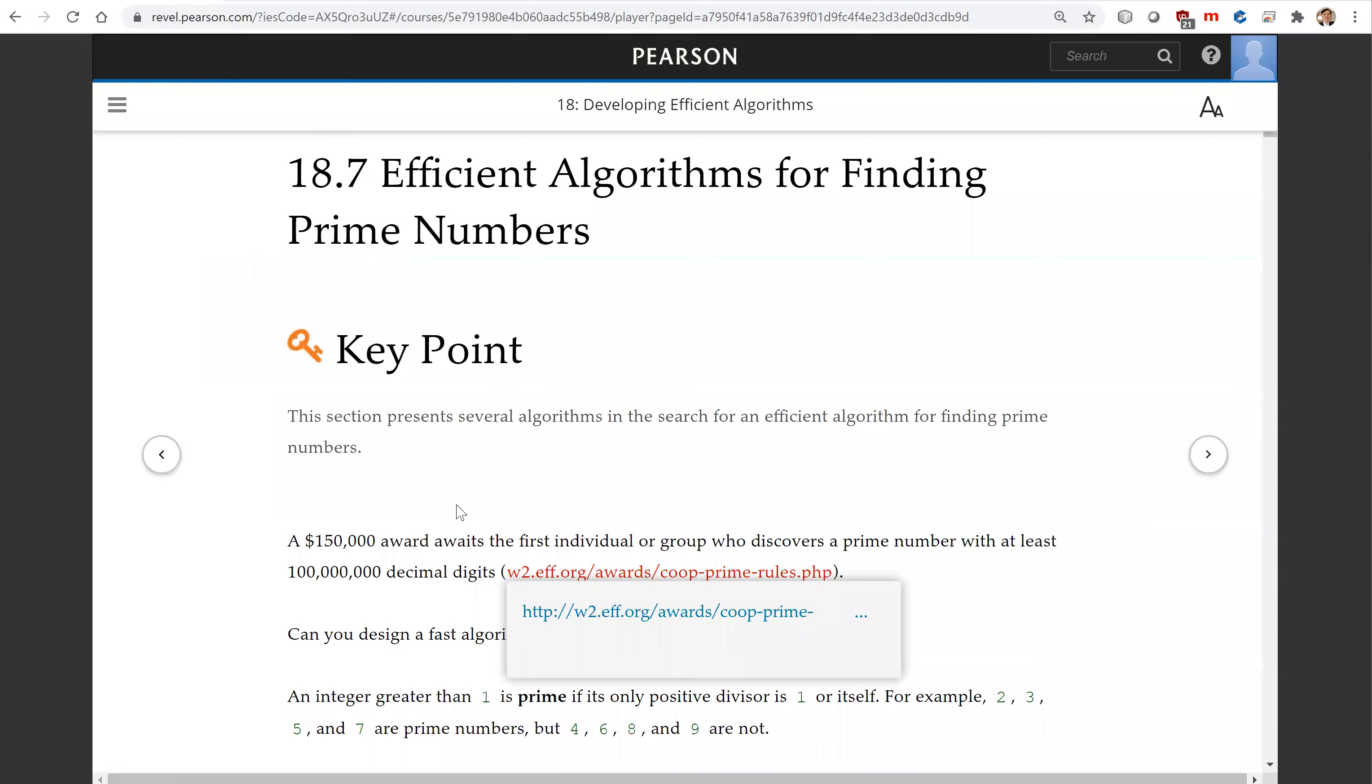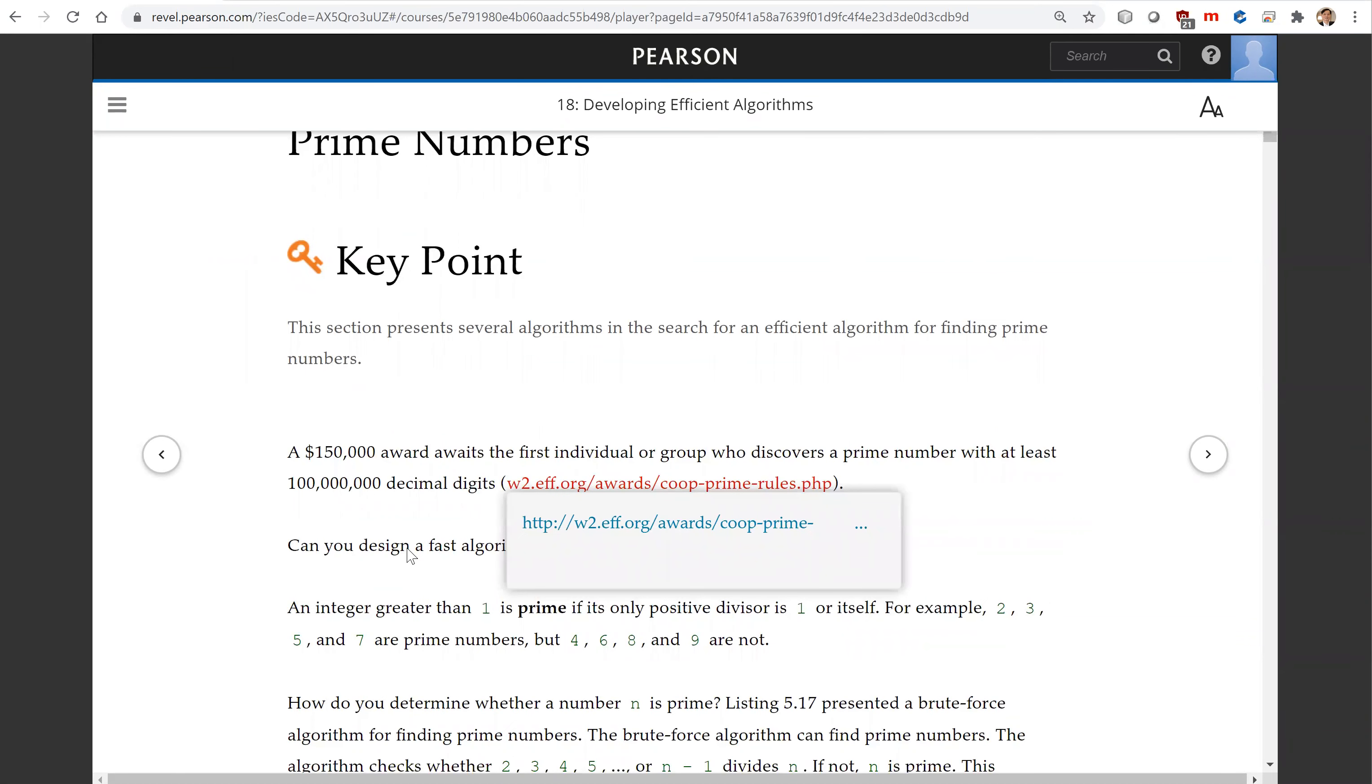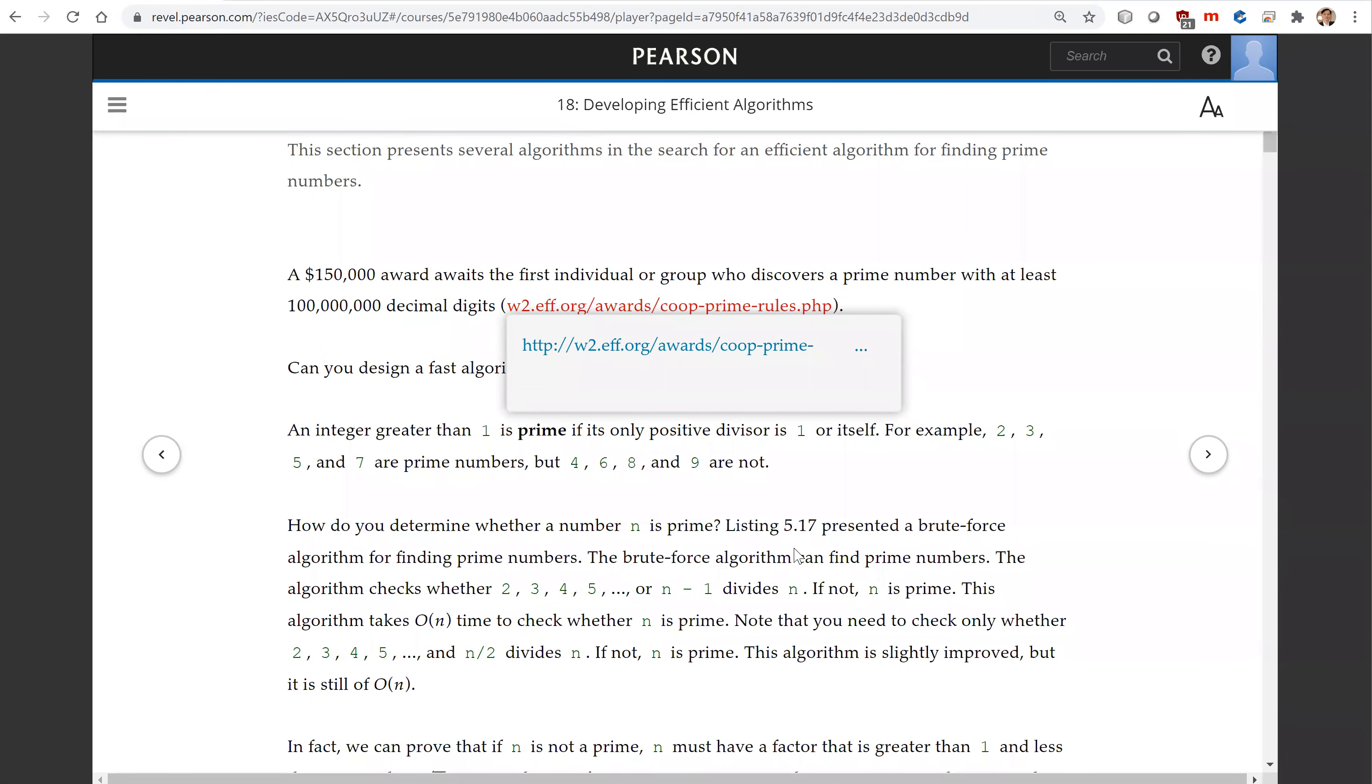We have already presented an algorithm for finding prime numbers in Listing 5.17. If we have a number n and want to test if n is prime, we look for possible divisors starting from 2 to see if 2 is a divisor for n, then 3,